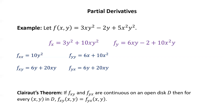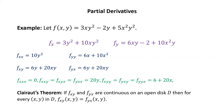Using Clairaut's theorem, we can compute all eight third partial derivatives while only calculating a few. fxxx is zero because fxx is a function of y only. fxxy, fxyx, and fyxx are all equal by Clairaut's theorem — computing fxxy by differentiating fxx with respect to y gives 20y. fxyy, fyxy, and fyyx are all equal; differentiating fxy with respect to y gives 6 plus 20x. Finally, fyyy is zero because fyy is a function of x only.